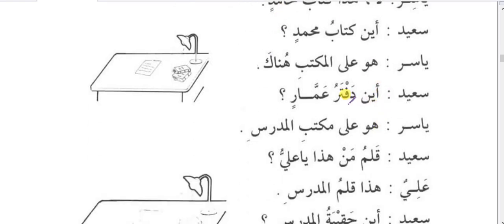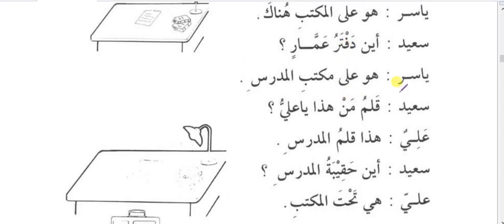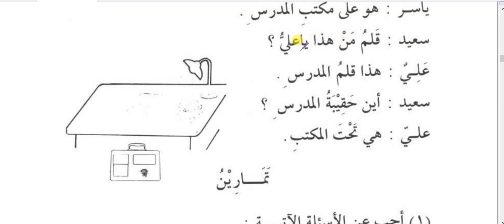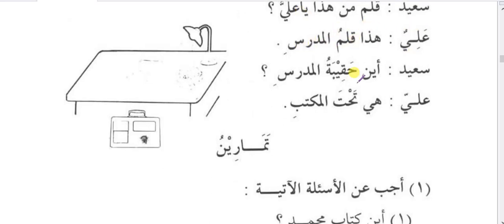Ayna daftaru ammarin — where is Ammar's register? Yasirun says: huwa ala maktabil-mudarrisi — it is on the teacher's table. Note: daftar means register here. Qalamu man haza ya Aliyyu — whose pen is this, O Ali? Haza qalamul-mudarrisi — this is the teacher's pen. Ayna haqibatul-mudarrisi — where is the teacher's bag? Aliyun says: hiya tahtal-maktabi — it is under the table. Note: tahta means 'under' and always becomes muzaaf.